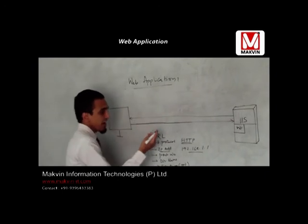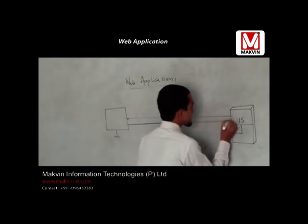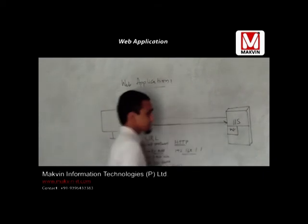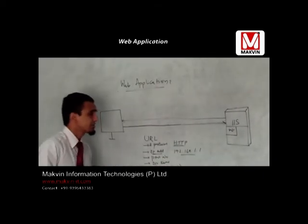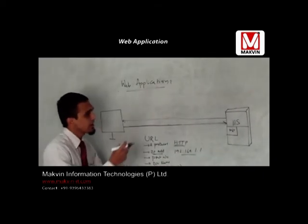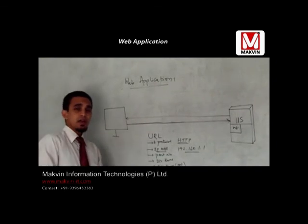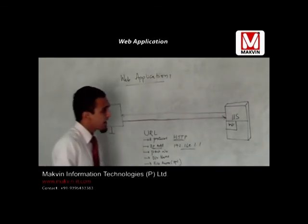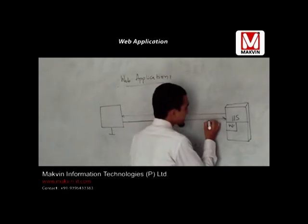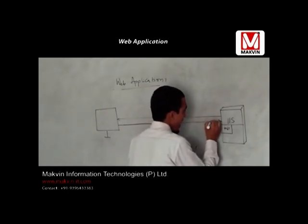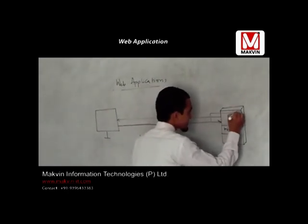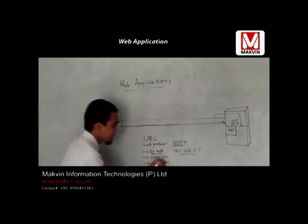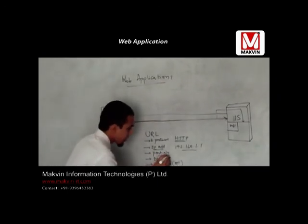I have reached this system using HTTP and the IP address, meaning I want to access a page from this system. Now on this system, not only IIS but many other programs could be running. So how do I identify that I want to access the application from IIS specifically? I identify it with the help of a port number.